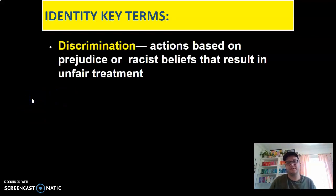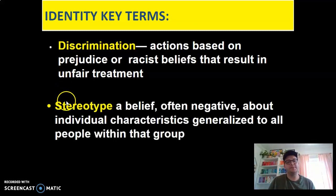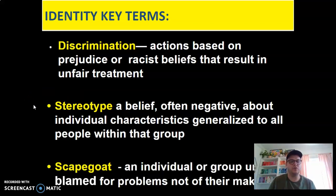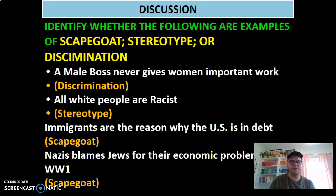Some key terms, mostly for the AP students, since your lesson involves this today: 'discrimination' — actions based on prejudice or racist beliefs that result in unfair treatment; 'stereotypes' — a belief, often negative, about individual characteristics generalized to all people within that group; and 'scapegoat' — an individual or group unfairly blamed for problems not of their making. These are all in your worksheet — try it yourself first, then use these answers to check.